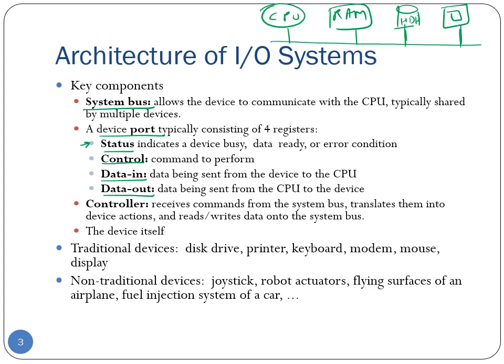The status register tells the CPU about the status of the device — for example, whether the device is busy, idle, in an error state, or whether the data the CPU requested is ready. The control register is used by the CPU to write the command it wants the device to execute, such as read and write commands. The command is essentially a byte — a sequence of zeros and ones — whose value is interpreted by the device.